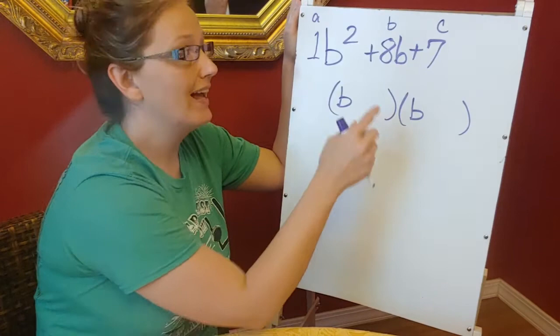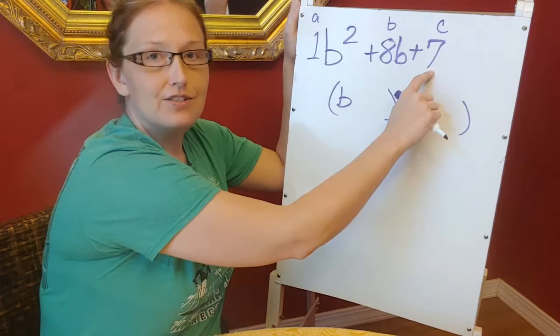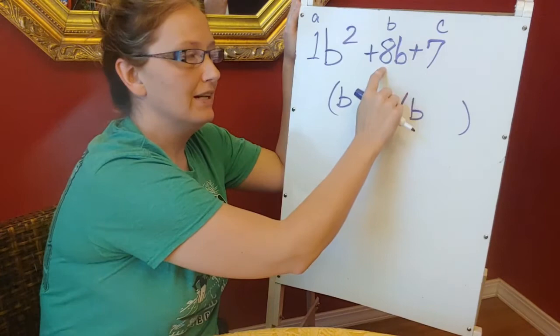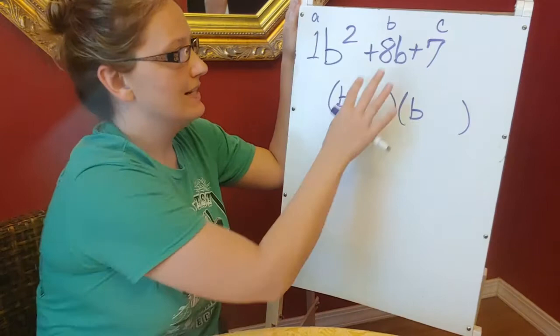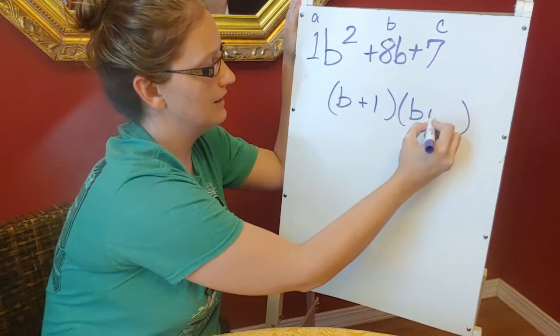Next, I'm going to look at my c term, my term that's the last one, and I'm going to look at factors of 7 that when I add them together I get whatever my b term is. So factors of this number c that when I add them together gives me my b term. So my factors of 7 are just 1 and 7, that's a super easy one, right? And when I add 7 + 1, I get 8. That makes this easy. These are both positives, I don't have to worry about that. So whenever I factor this, it's going to look like that.